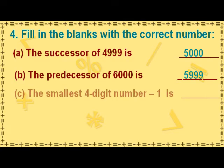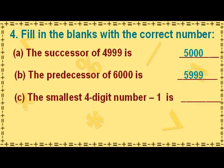We know that the smallest 4-digit number is 1000. So when we subtract 1 from 1000, we get the number 999.